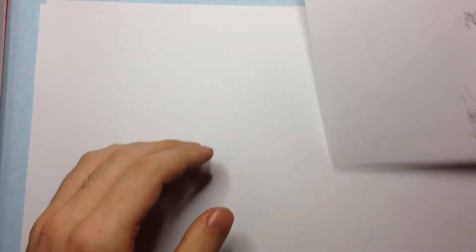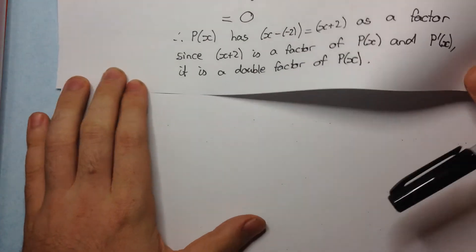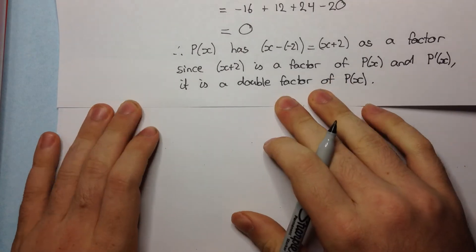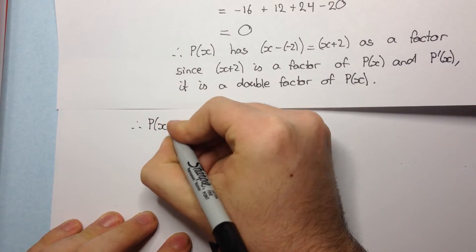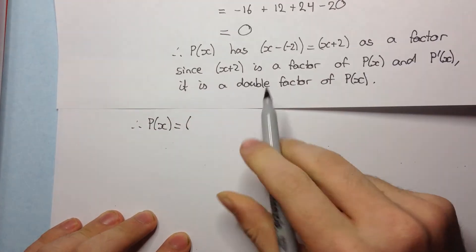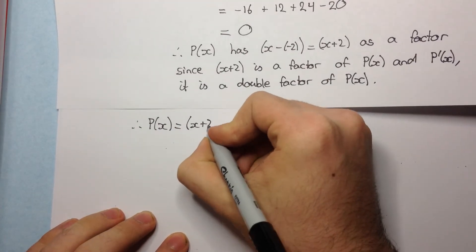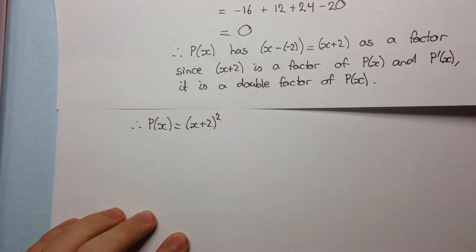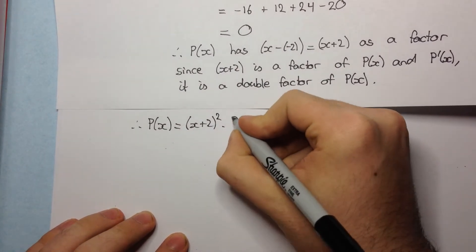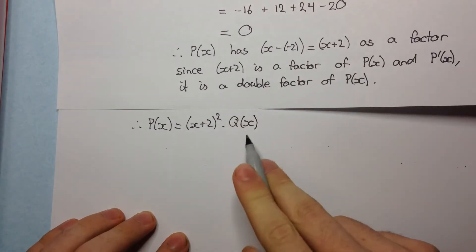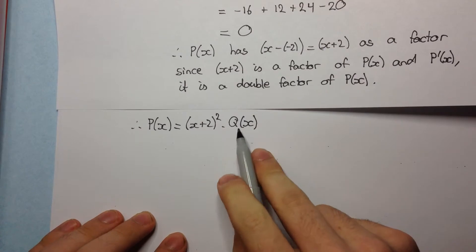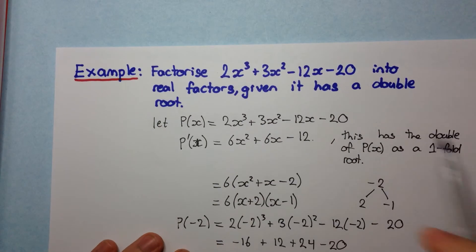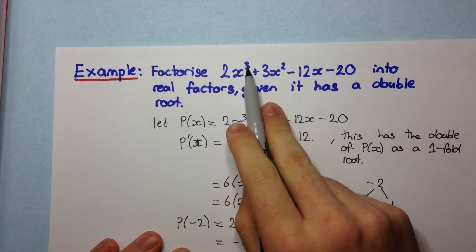So now the next step would be to write P(x) in this form. This means P(x) is equal to, well, since x + 2 is a double factor, it's (x + 2)² times Q(x). Now we need to determine what this Q(x) is. We note that in the question, the polynomial P(x) has a degree of 3.